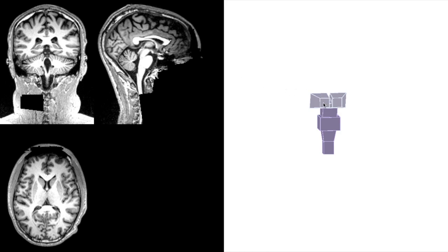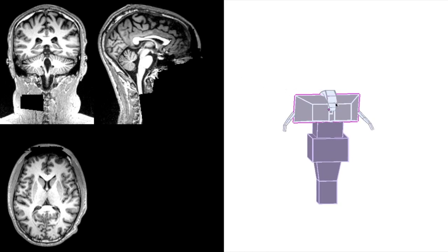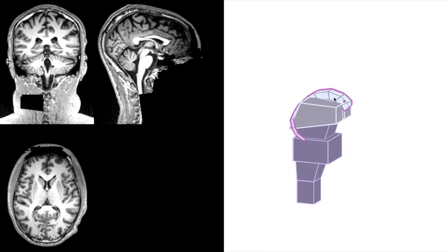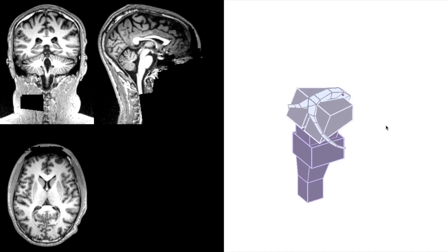So there's the thalamus again, and here's the fornix arching over the top of it. Appropriately, fornix is Latin for arch. Its legs then curl around either side like so.